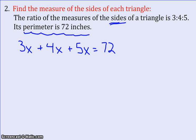3x plus 4x is 7x. 7x plus 5x is 12x. So 12x equals 72. And then when I divide both sides by 12, I get x equals 6.